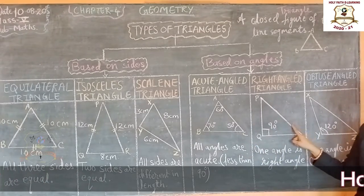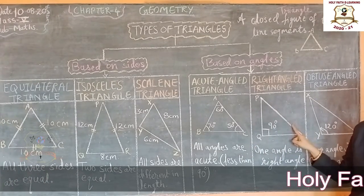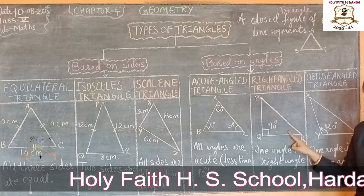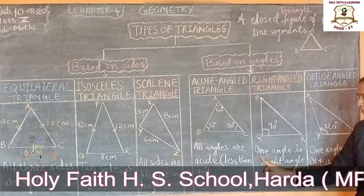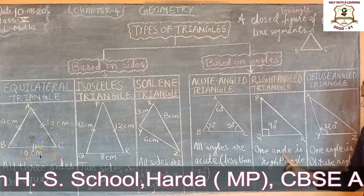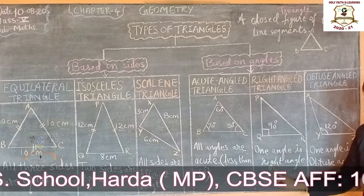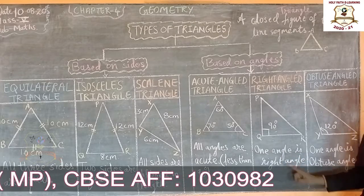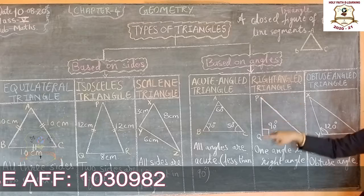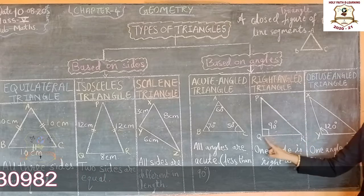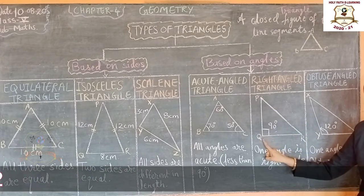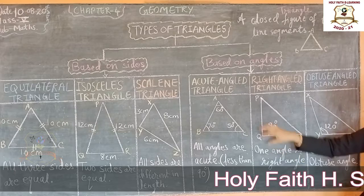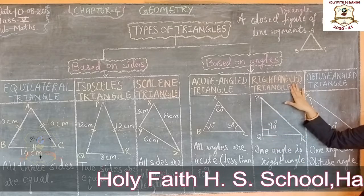Next is right angle triangle. A triangle is called a right angle triangle if its one angle is a right angle, or 90 degrees. See, in triangle PQR, angle Q is equal to 90 degrees. So this is a right angle triangle.